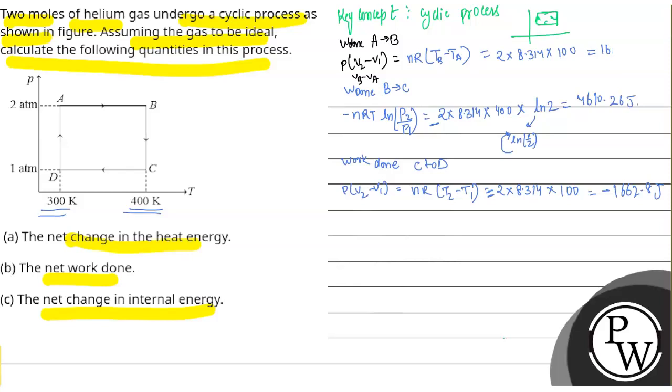D to A will be minus of nRT ln P2 by P1. Now what will be, this will not be made by the minus. Minus 3457.69 joules. So we have calculated the work done.